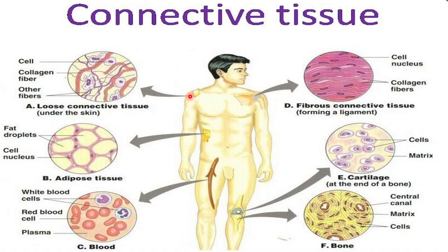If an allergen attacks the body, the mast cells start secreting chemicals that trigger the defense system. Sometimes we experience swelling when there is an insect bite or exposure to an allergen — itching or swelling — and that is due to the action of the mast cells, which fall under areolar connective tissue.